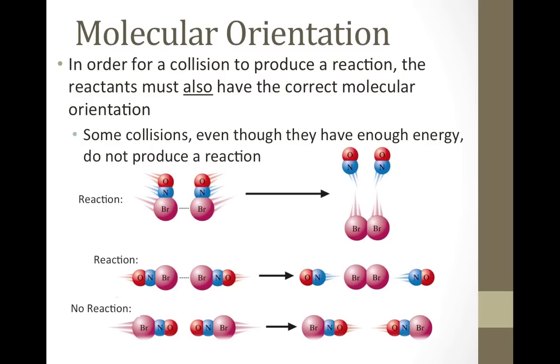But in this bottom reaction, no matter what temperature or how fast these particles run into each other, because they're colliding oxygen-in to oxygen-in, the products won't be formed. The bromine molecule needs two bromine atoms, and those are the atoms that aren't colliding.